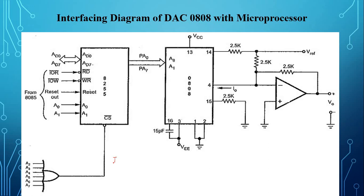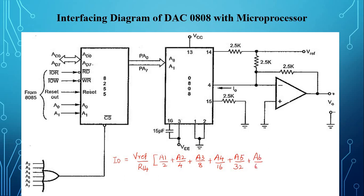The output current I_out can be given as: I_out = (V_reference / R14) × (A1/2 + A2/4 + A3/8 + A4/16 + A5/32 + A6/64 + A7/128 + A8/256). Inputs A1 through A8 can be either 0 or 1.